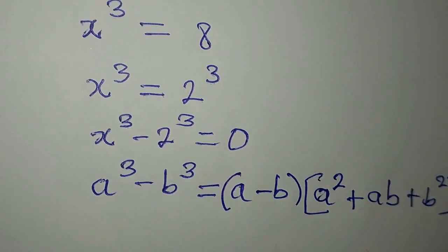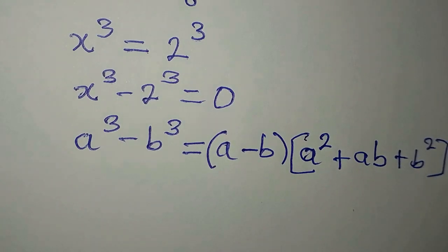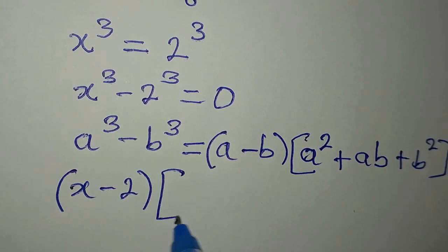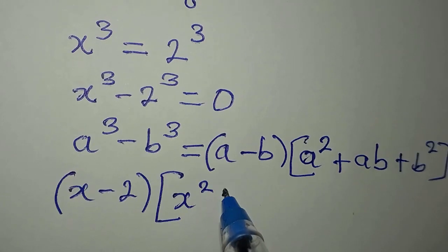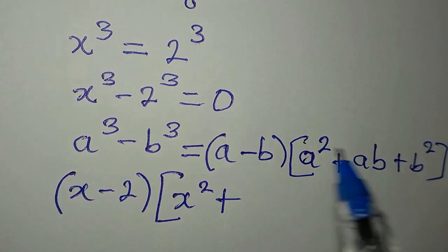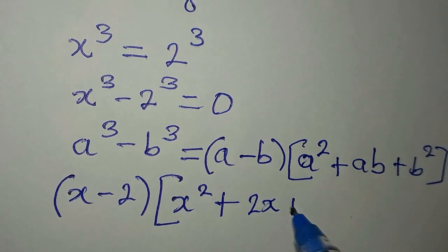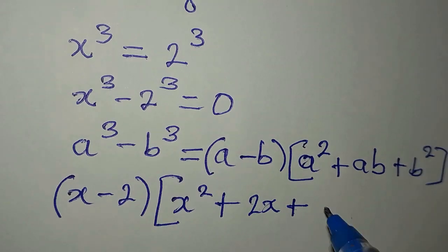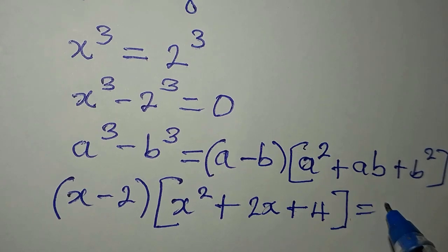We are going to write this in the form of this. Our a minus b becomes x minus 2. Then a squared, that would be x squared plus ab, that would be x times 2, which is 2x, plus b squared. The b squared will be 2 squared, which gives 4. Then we equate and get 0.